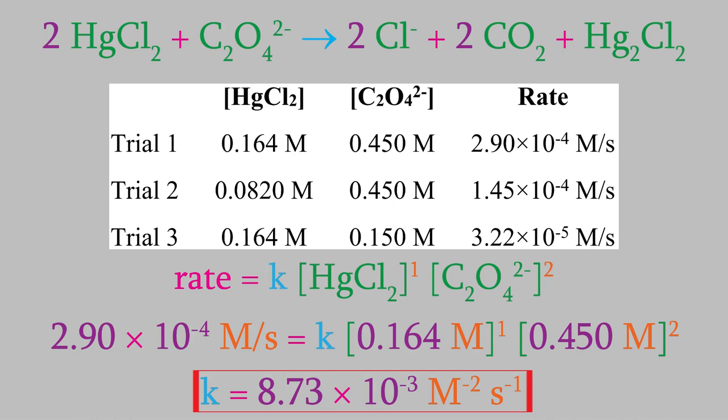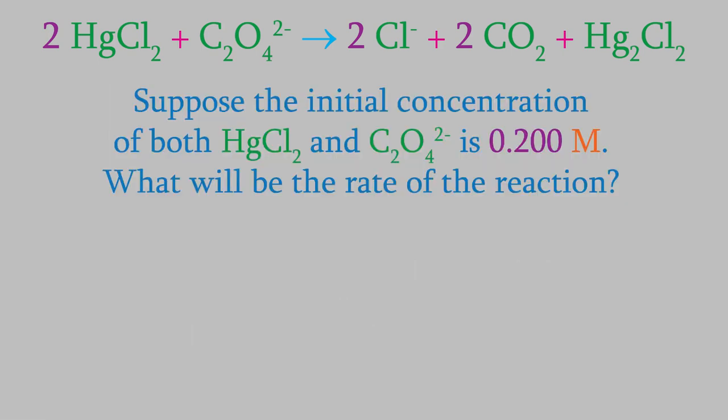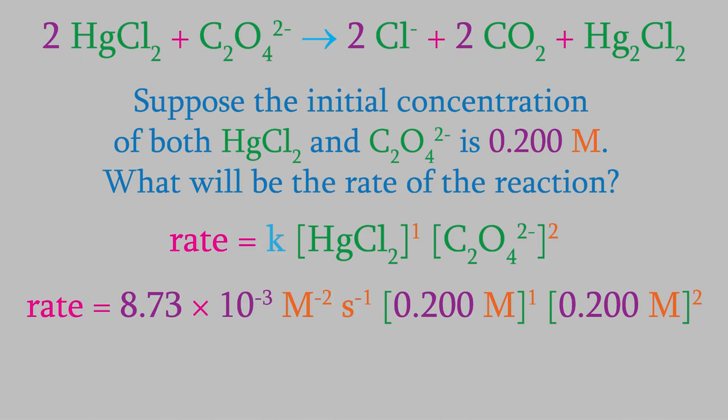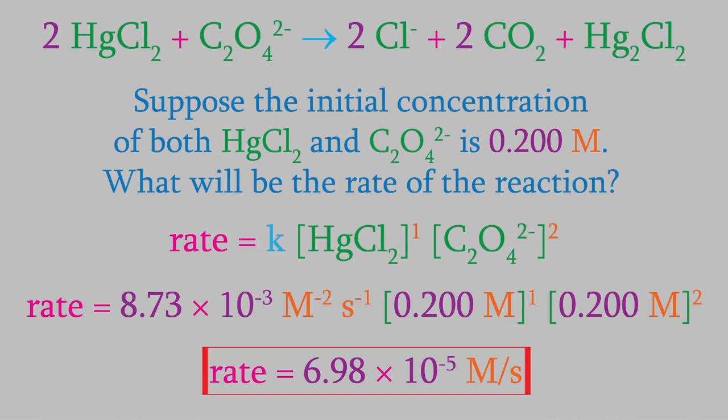Now that we know k, we can determine the rate of this reaction for any starting concentrations. For example, suppose we started with a concentration of 0.200 molar for both reactants — what would be the reaction rate? Because of all the work we just did, it'll be easy to calculate this. We use 0.200 molar for the concentrations and the value of k we just determined, which gives us a rate of 6.98 times 10 to the minus 5 molars per second.